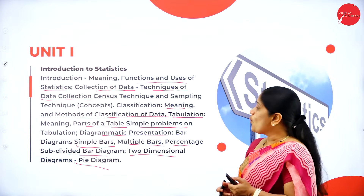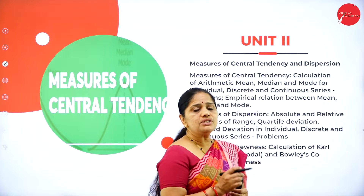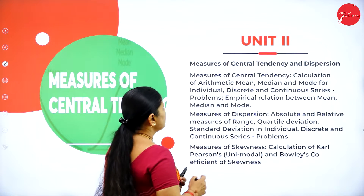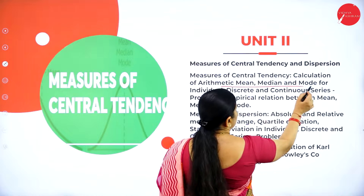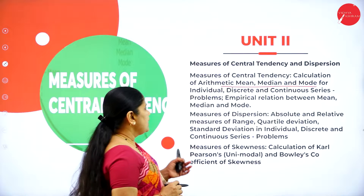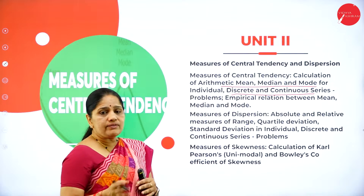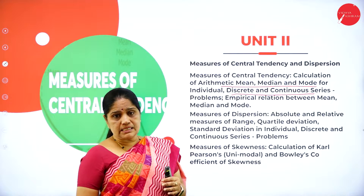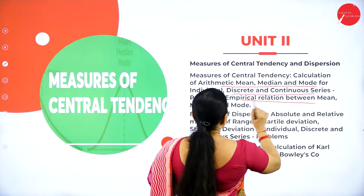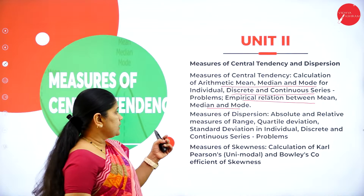Under unit 2, we will be having a discussion on the measures of central tendency. We will be studying about calculation of arithmetic mean, median and mode — and also the individual, discrete and continuous series. We will learn what individual numbers, continuous numbers and discrete series are, with problems on that. An empirical relationship between mean, median and mode also comprises part of the second unit.